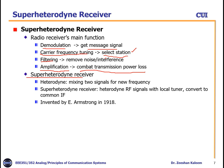It is called 'heterodyne' because it mixes two signals to generate a new frequency. The super heterodyne receiver heterodynes the radio frequency signal with the local carrier to convert it to a common intermediate frequency (IF). The benefit is that processing is always done at the same fixed lower IF, which is advantageous for circuit design, and we need only one circuit for multiple channels.